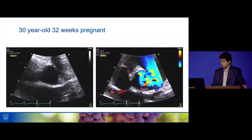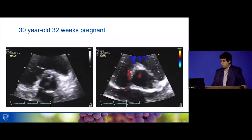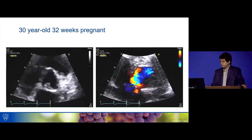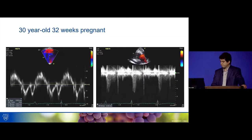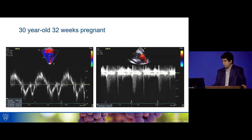With color Doppler on short axis, similar to the long axis view, there wasn't much in the way of aortic regurgitation. Moving to Doppler data, diastology was completely normal — normal PA pressures, normal E prime velocity — so everything looked very good from a relaxation standpoint.